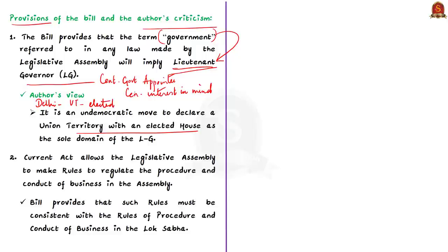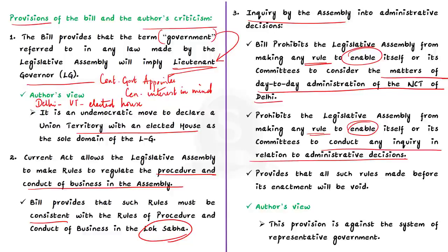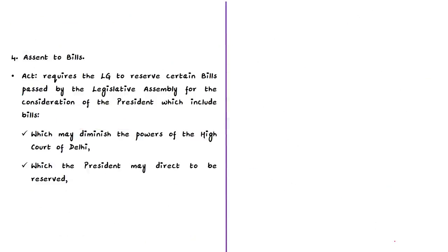The current act allows the legislative assembly to make rules to regulate the procedure and conduct of business in the assembly. This bill provides that such rules must be consistent with the rules of procedure of the Lok Sabha. Regarding the third amendment on inquiry into administrative decisions, the bill prohibits the legislative assembly from making any rule to enable itself or its committees to consider matters of day-to-day administration of the NCT of Delhi or to conduct any inquiry in relation to administrative decisions. All such rules made before the bill's enactment will be void.